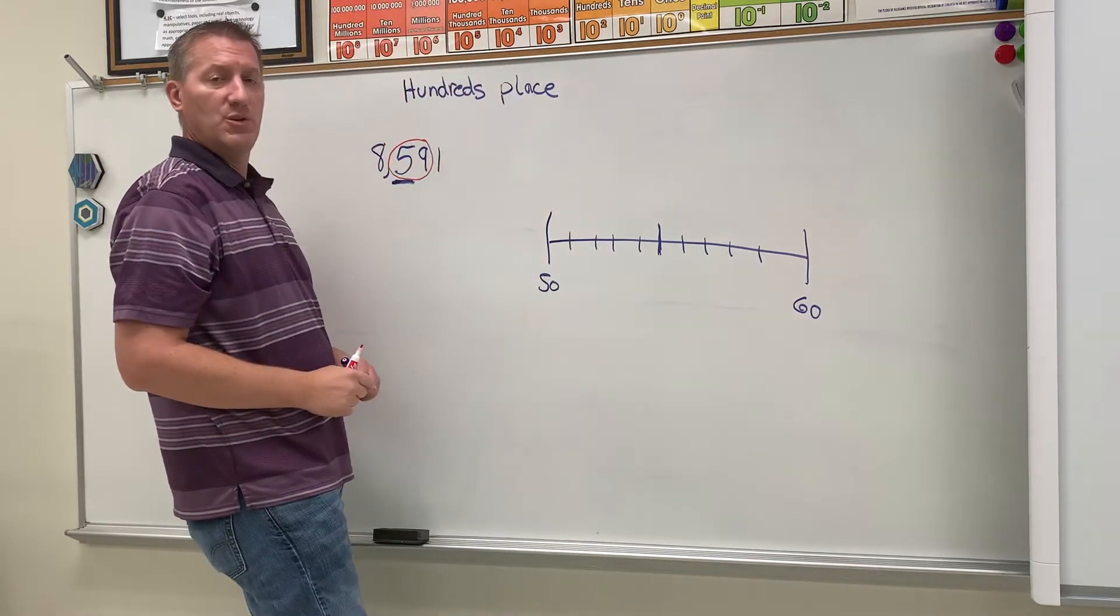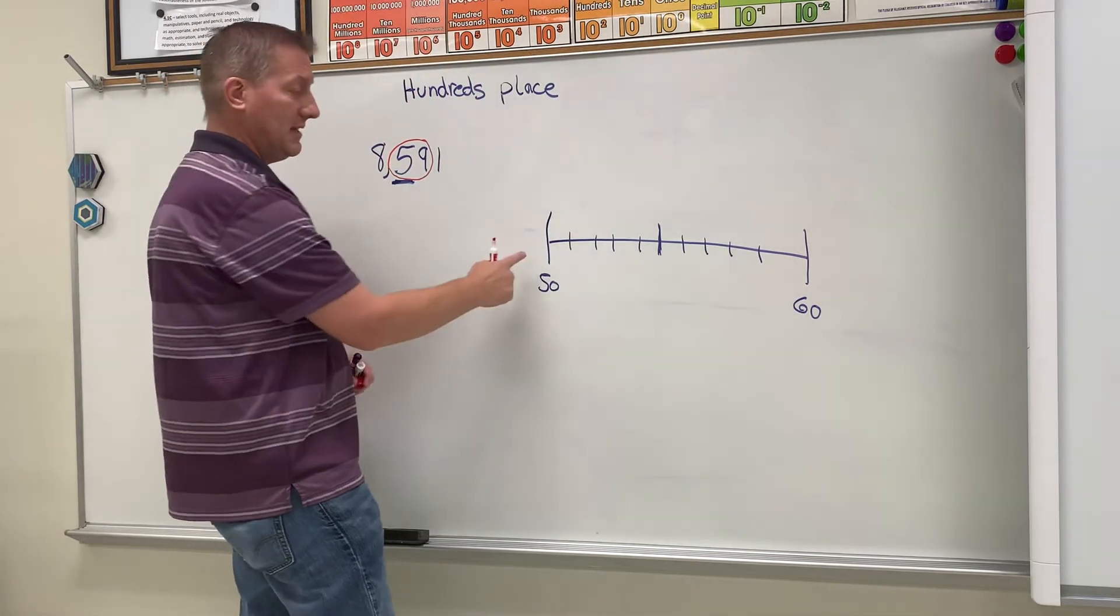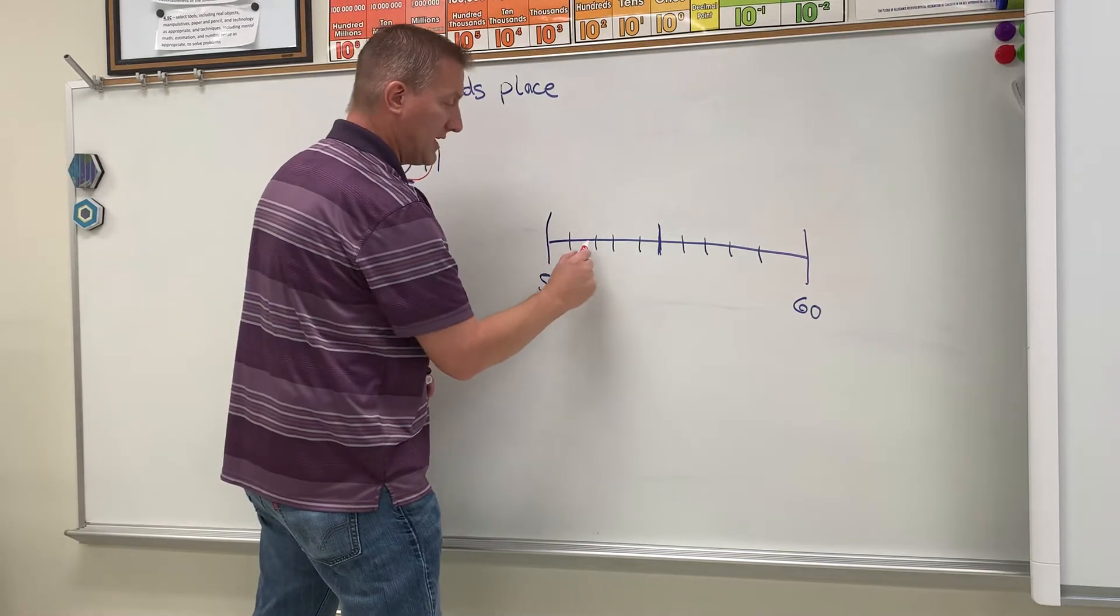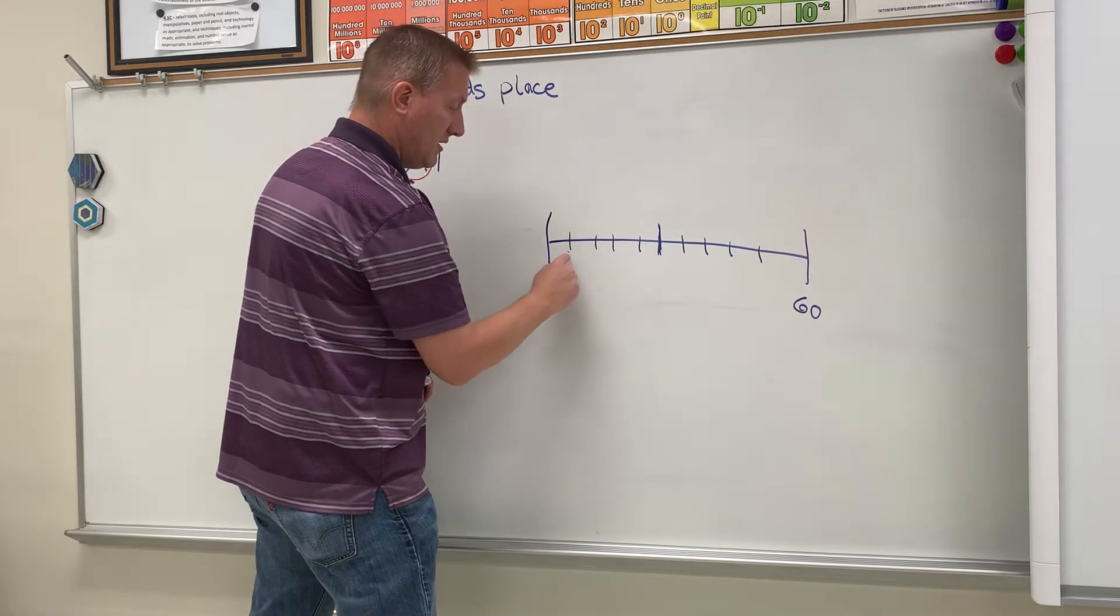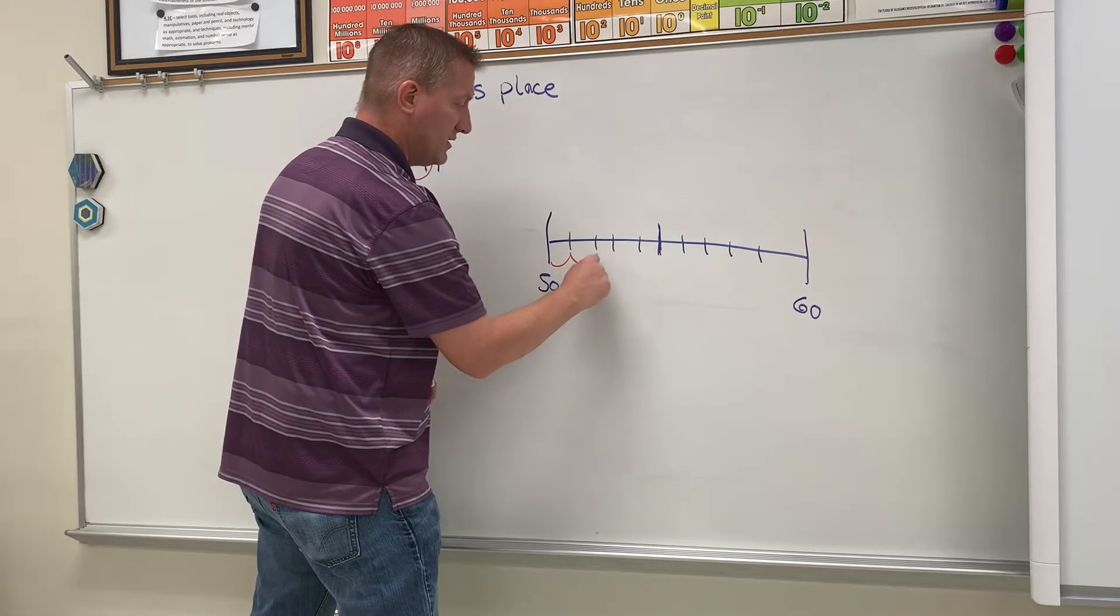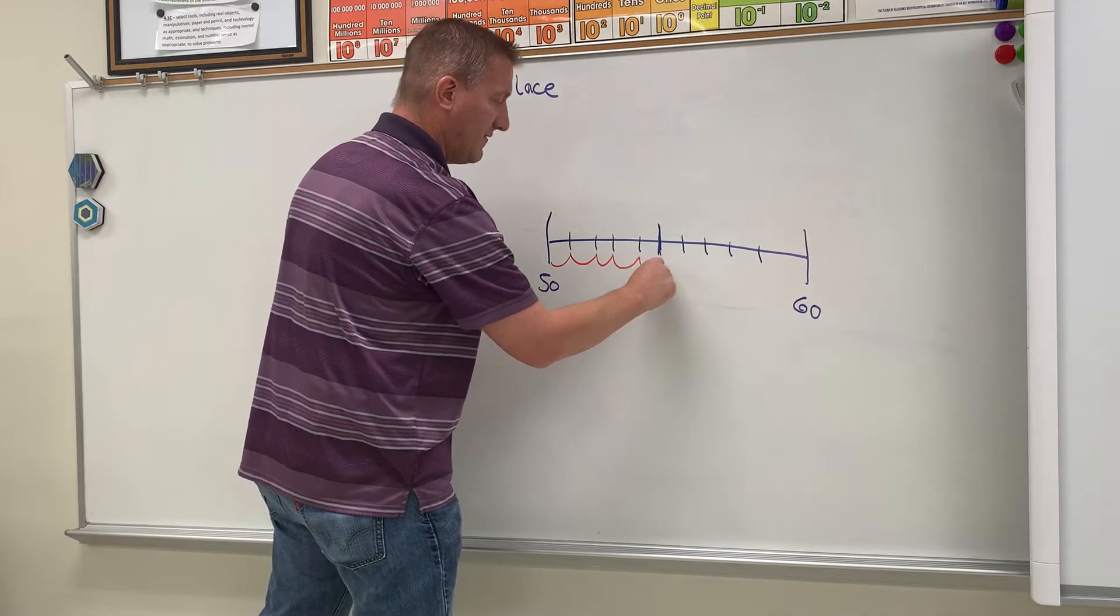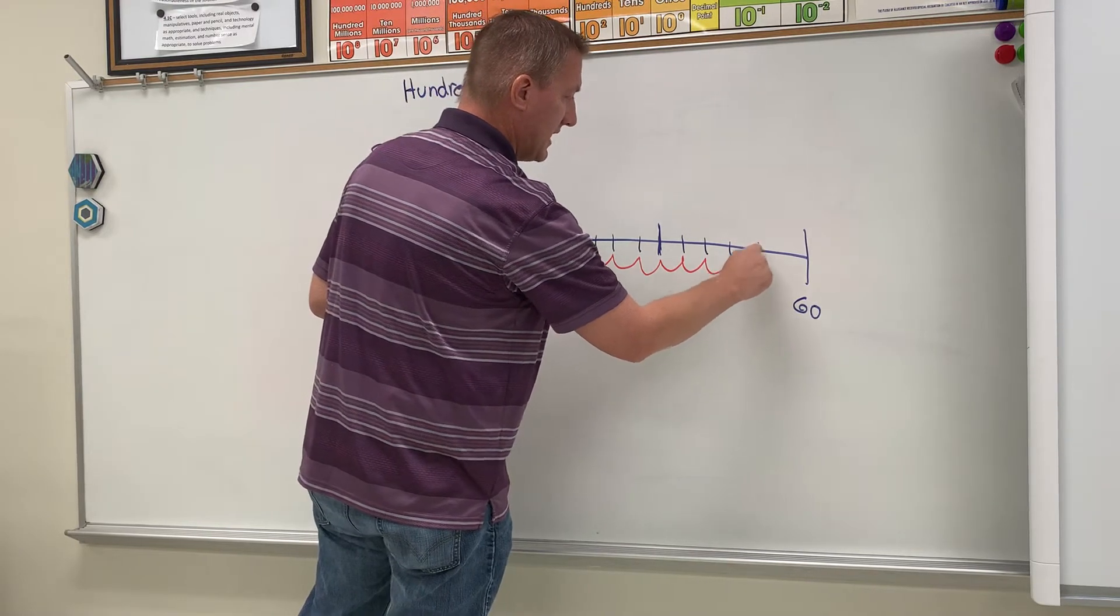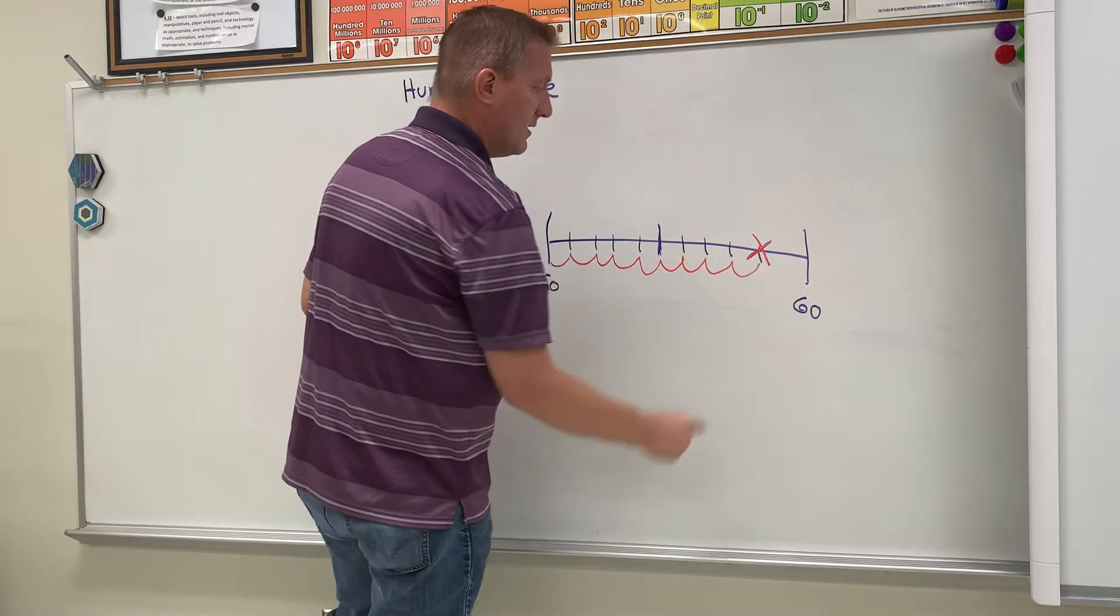So you would put it on a number line and you would look where 59 would be. Well, if you count 51, 52, 53, 54, 55, 56, 57, 58, 59, so 59 would be right there on the number line.